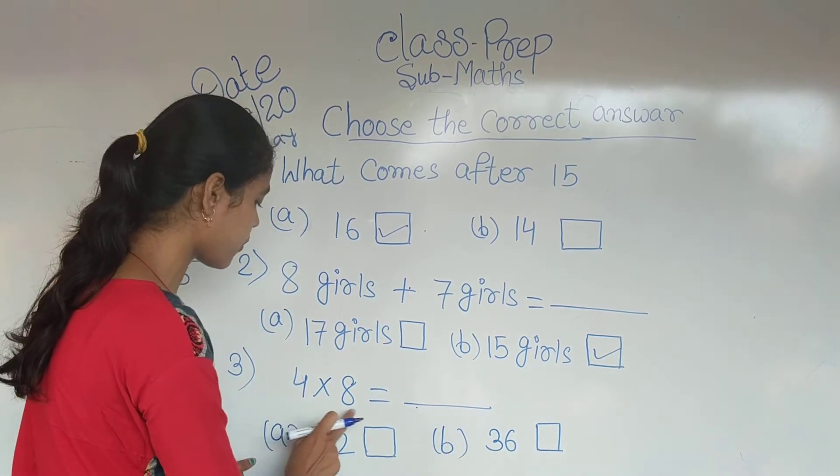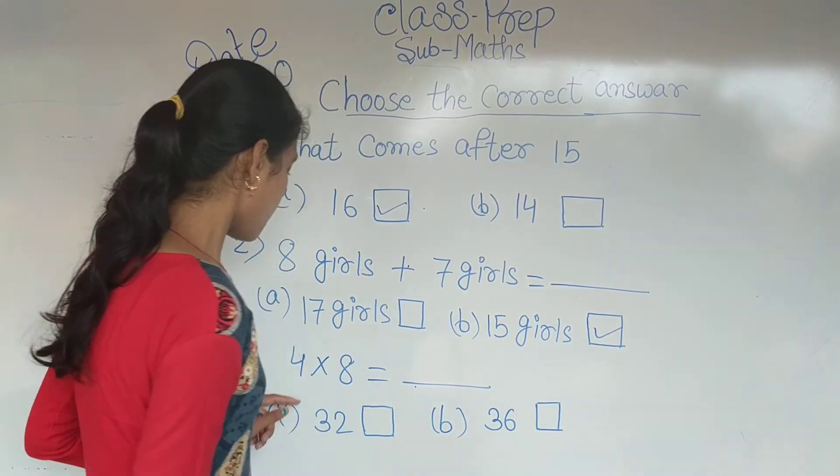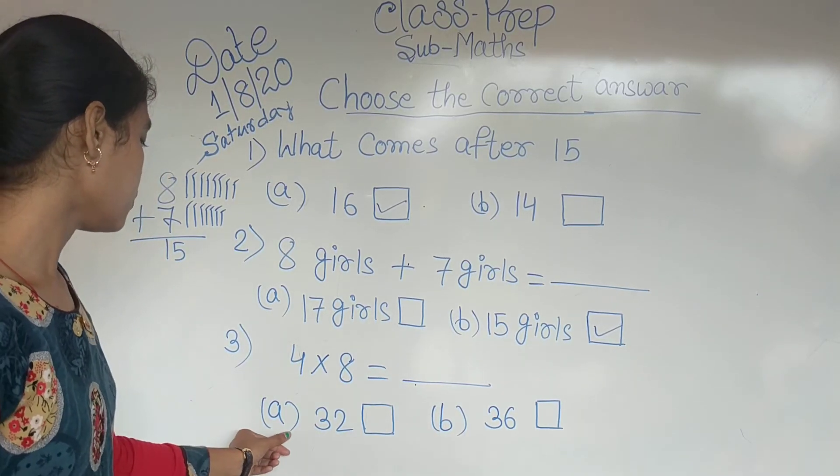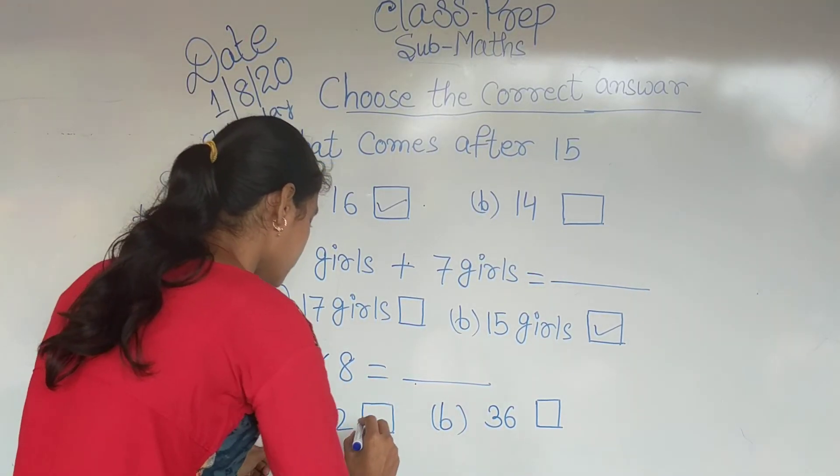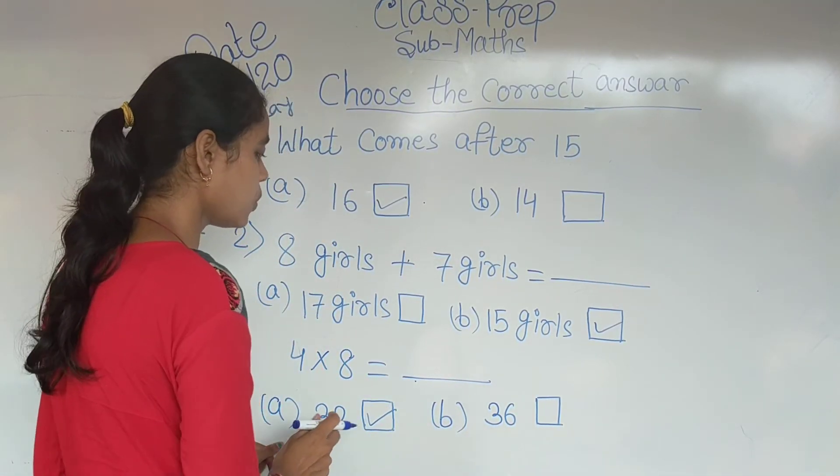To logo ko dekhna hai kya hota hai. 4, 8 za 32 ya 4, 8 za 36? 4, 8 za kitna hota hai? 32. To option A is the correct answer: 32. So tick 32.